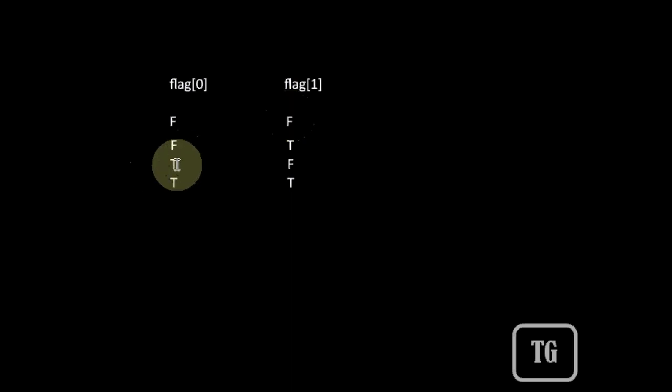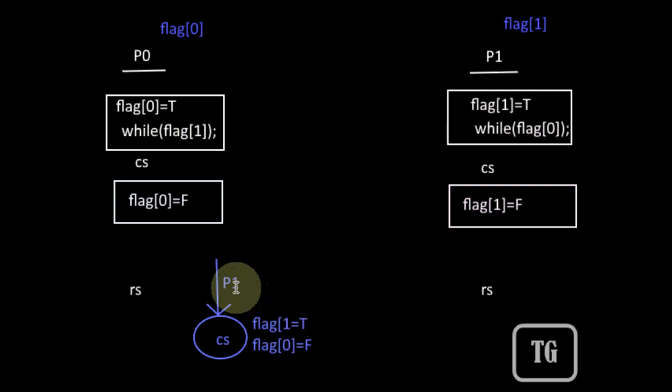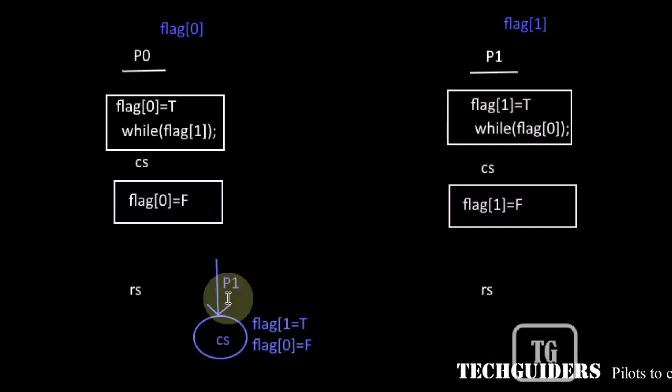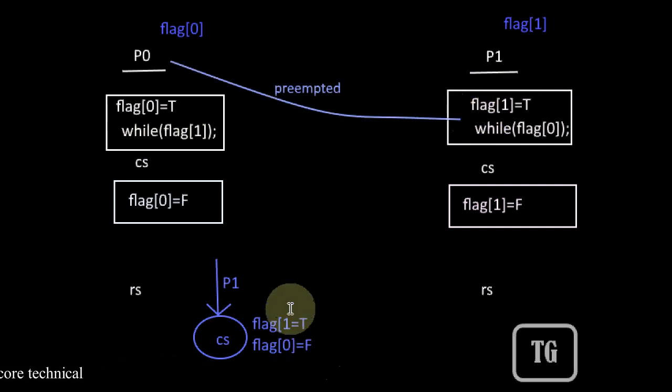However, there is one major issue. If both flags are false, both processes are not interested in entering the critical section. If one flag is true, only the corresponding process will be inside the critical section, ensuring mutual exclusion. But consider this scenario: suppose P1 hasn't entered the critical section yet but wishes to, so it sets flag[1] to true.